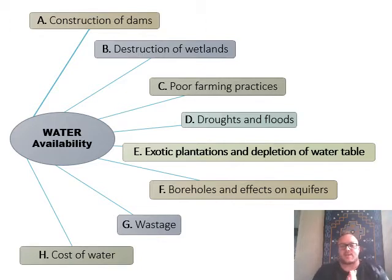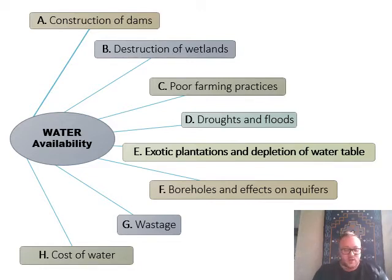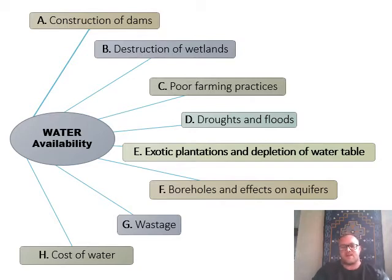We're going to start with exotic plantation and depletion of the water table. It is extremely important that you understand what the water table is and how it shifts and changes, just in case I find a case study which involves the change in the pH of the water and how that could affect humans - maybe it's important.